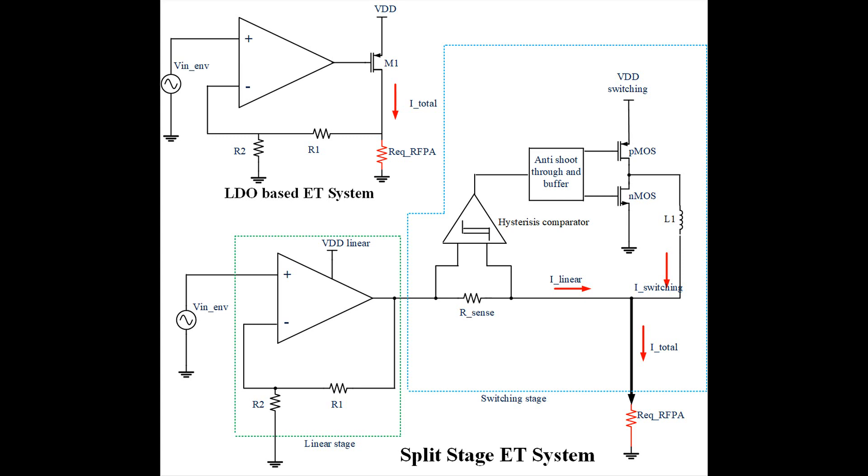The high frequency signal where low energy lies is amplified by the linear amplifier which is of course not very efficient. The low frequency energy of the spectrum of the envelope is amplified by the switching mode amplifier and it does it very efficiently.